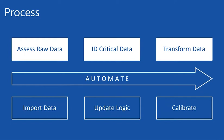First, you assess the raw data being generated by fleet management systems. Identify the critical data that drives operations and is needed for model accuracy. This data needs to be transformed into a usable, value-adding format. On the modeling side, you import the data, make updates to the generic logic if needed — such as unique dispatch logic — and then calibrate the model. The key to this entire process is having all of this automated, and that is the big value add, which we will show in our demo today.